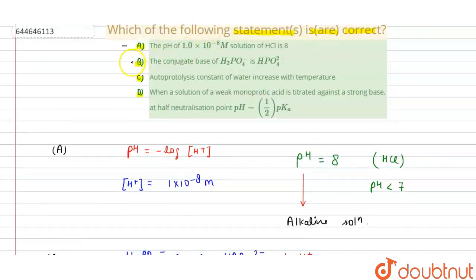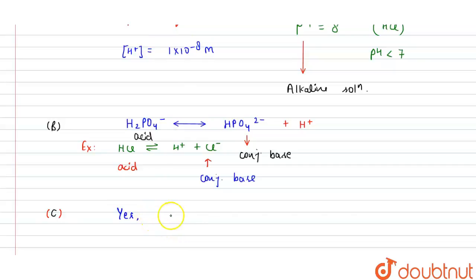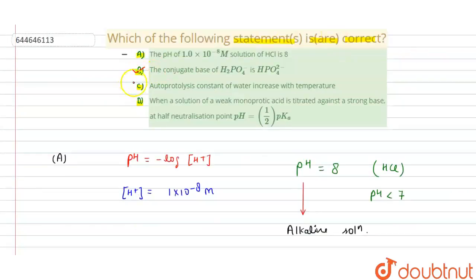Now we check option C: the autoprotolysis constant of water increases with temperature. This is a theory-based question. The answer is yes, it increases. The reason is that the auto-ionization of water increases with temperature. Therefore, option C is also a correct statement.